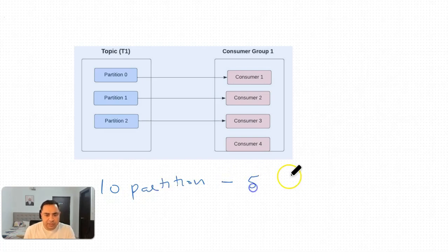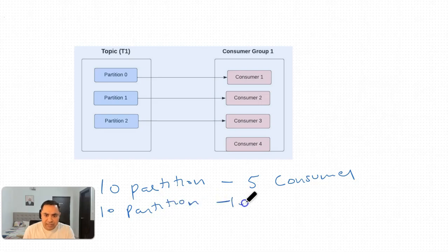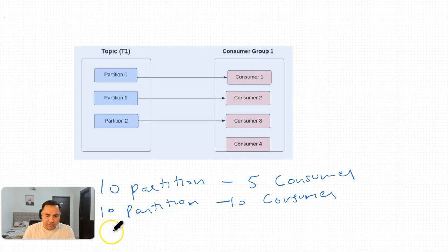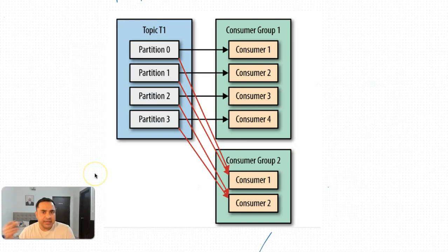The rule is: if we have more consumers than partitions, the extra consumers sit idle. If we have fewer consumers than partitions, consumers read from multiple partitions. For example, with 10 partitions and 5 consumers, each consumer reads from 2 partitions. With 10 partitions and 10 consumers, each reads from 1 partition. With 10 partitions and 15 consumers, 5 consumers sit idle.